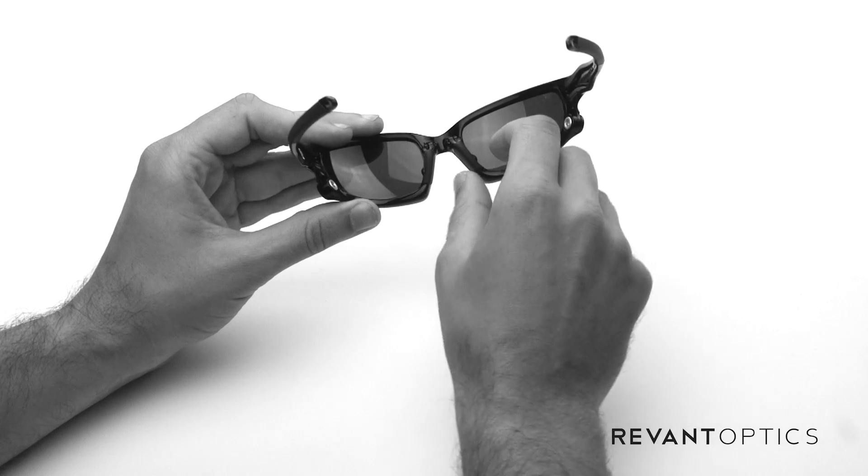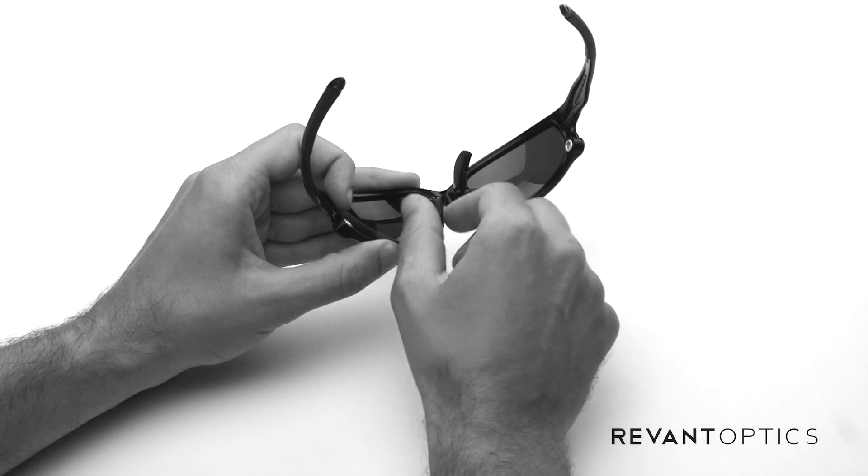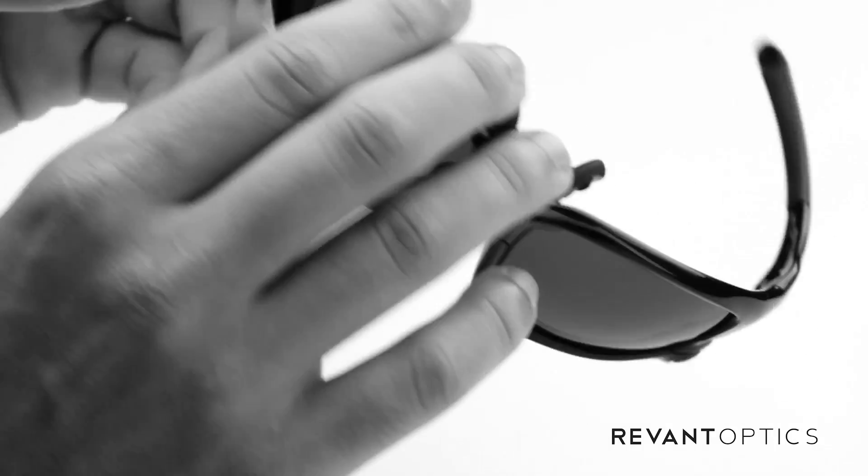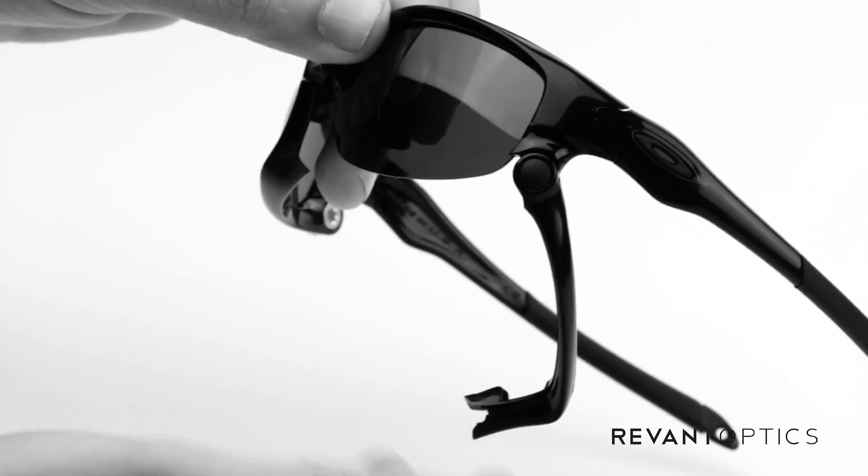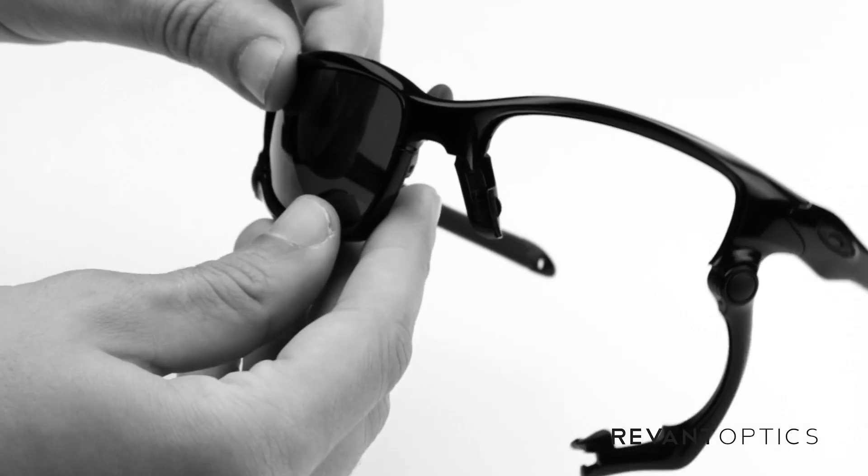Oakley built this frame so that it actually opens up here. You're going to slide it up. Do that on the opposite side here as well. Then what that allows you to do is actually open up the bottom half of the frame there, slide the lens out, and then you can do the same on this side.